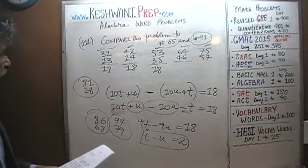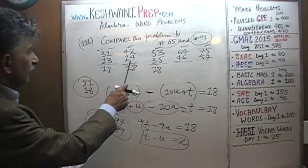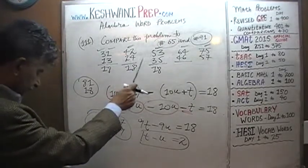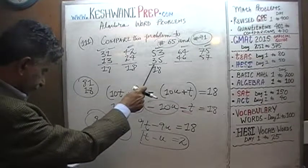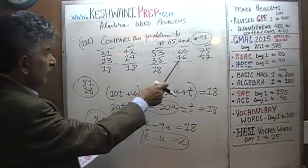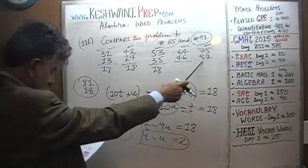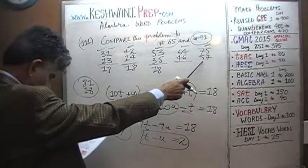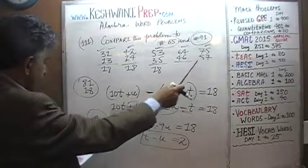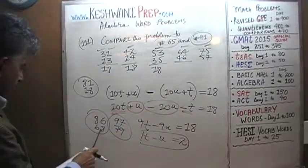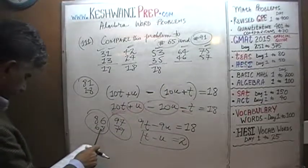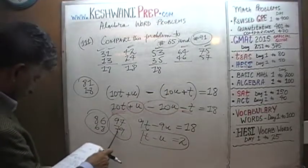So the valid pairs are: 13, 24, 35, 46, 57, 68, and 79 — those are the possible scenarios.